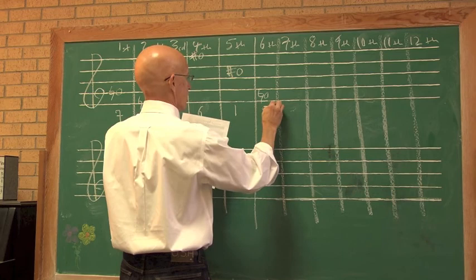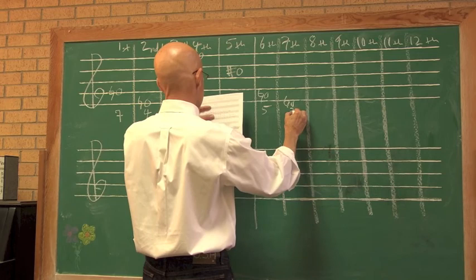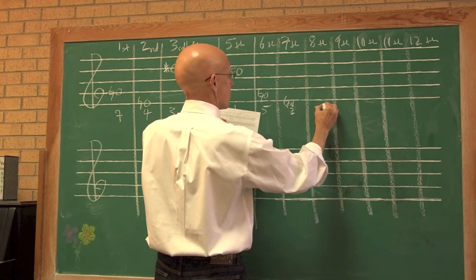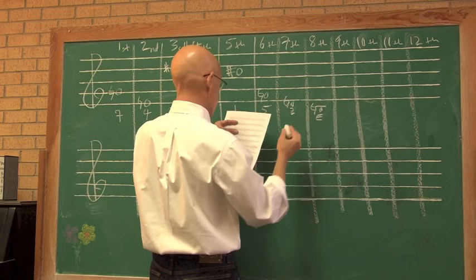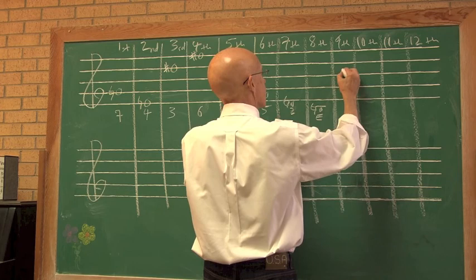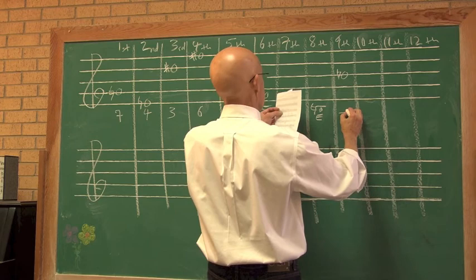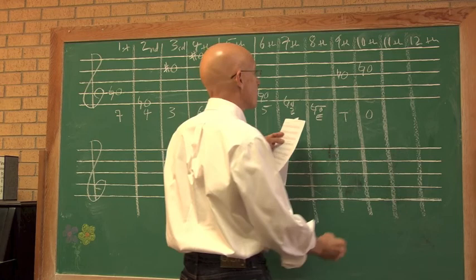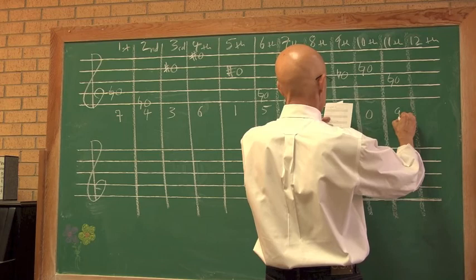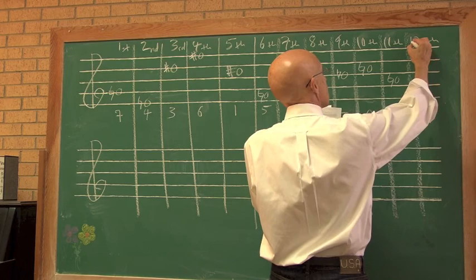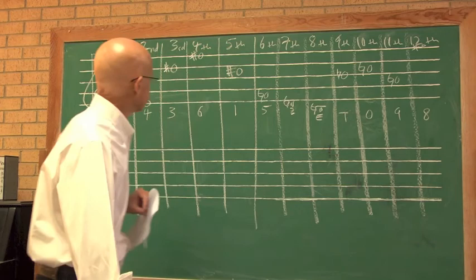The sixth note is F Natural, Pitch Class 5. The seventh note is D Natural, Pitch Class 2. The eighth note is B-flat Natural, Pitch Class 10. The ninth note is B Natural, Pitch Class 11. The tenth note is C Natural, Pitch Class 0. The eleventh note is A Natural, Pitch Class 9. And the twelfth note is this G Sharp, Pitch Class 8.